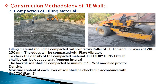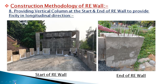Next, compaction of the filling material, which is also a very important process in construction of the RE wall. The filling material should be compacted with a vibratory roller of 10 ton capacity in layers of 200 to 250 mm. The edges of the RE wall shall be compacted with a plate vibrator. To check the density of the compacted material, we do the field dry density test as per codal provision. The optimum moisture content (OMC) of each layer shall be checked in accordance with IS 2720 Part 2.